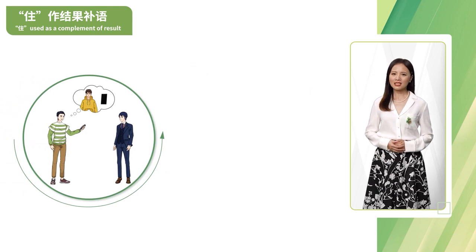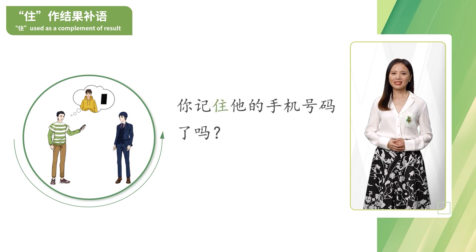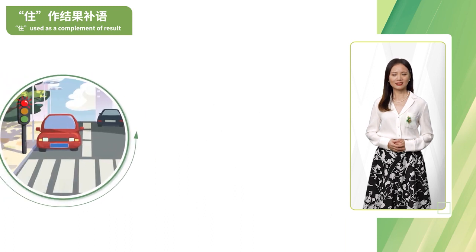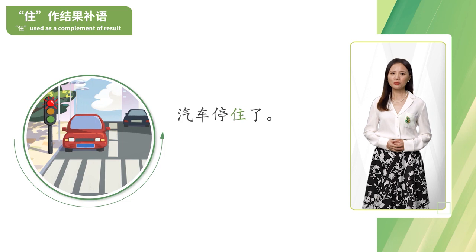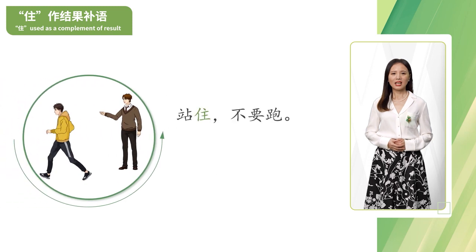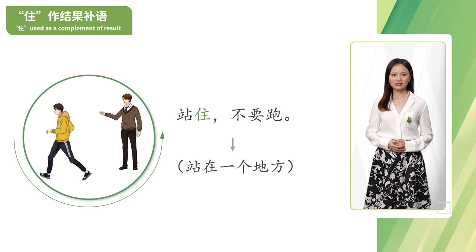Let's look at some pictures and say them together. 你记住他的手机号码了吗?意思是记在大脑里。汽车停住了。意思是汽车停在一个地方了。站住,不要跑。意思是站在一个地方。